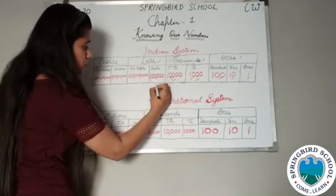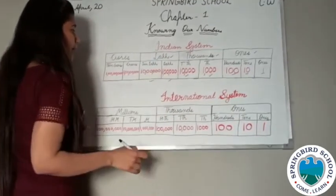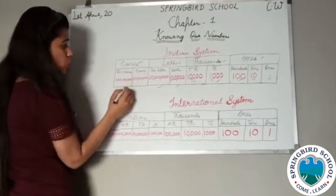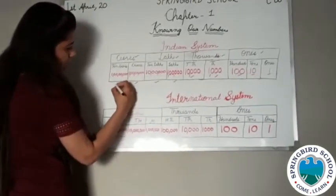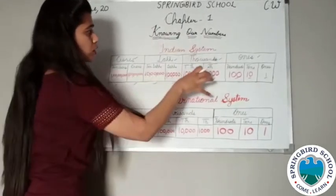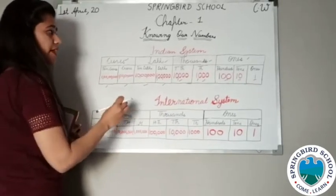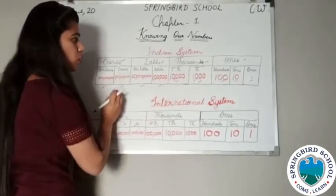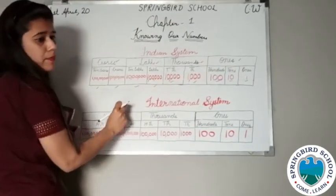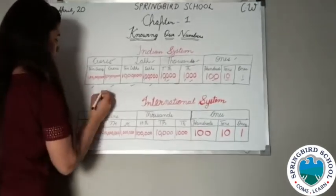Then comes the lakh head. In the lakh head, the first place is lakh and the second is ten lakh. Then comes the crore head. In the crore head there are again two places: crore and ten crore. According to this number system, we will arrange our numbers. In the Indian system we will always follow this pattern to write numbers in words and in numerals.